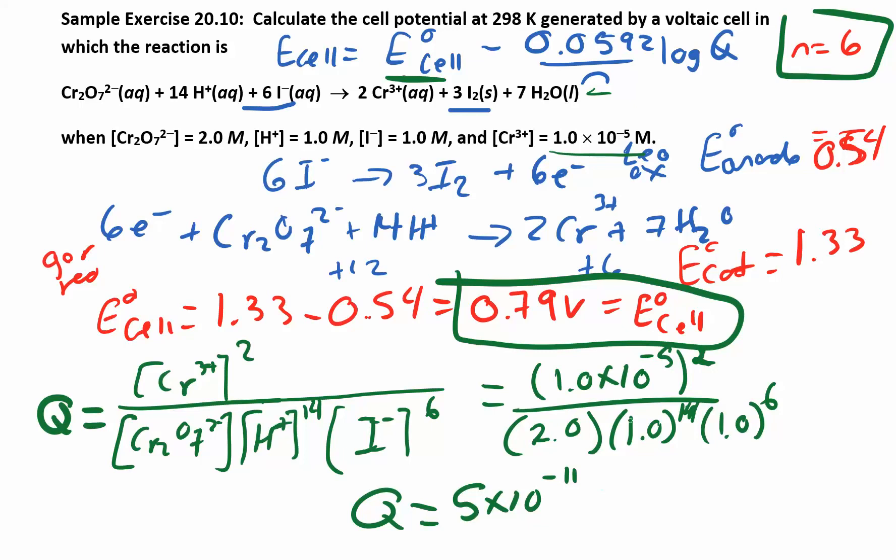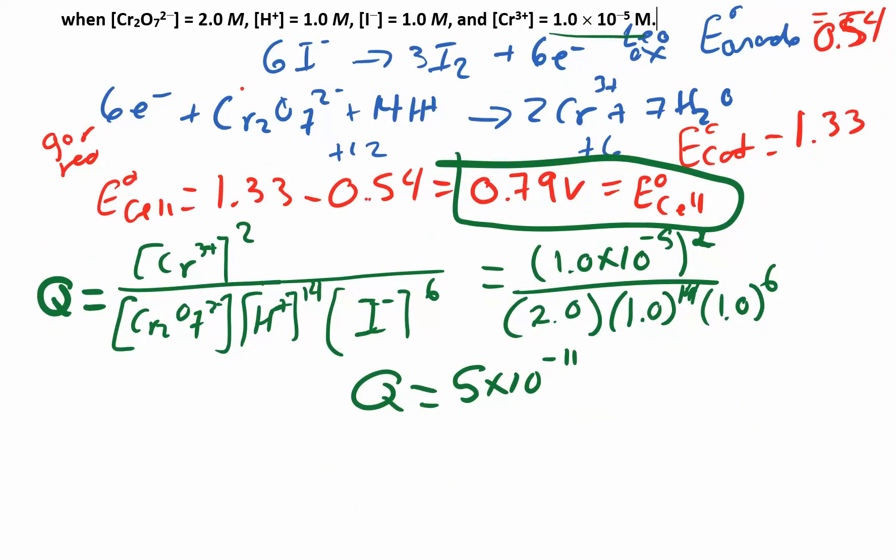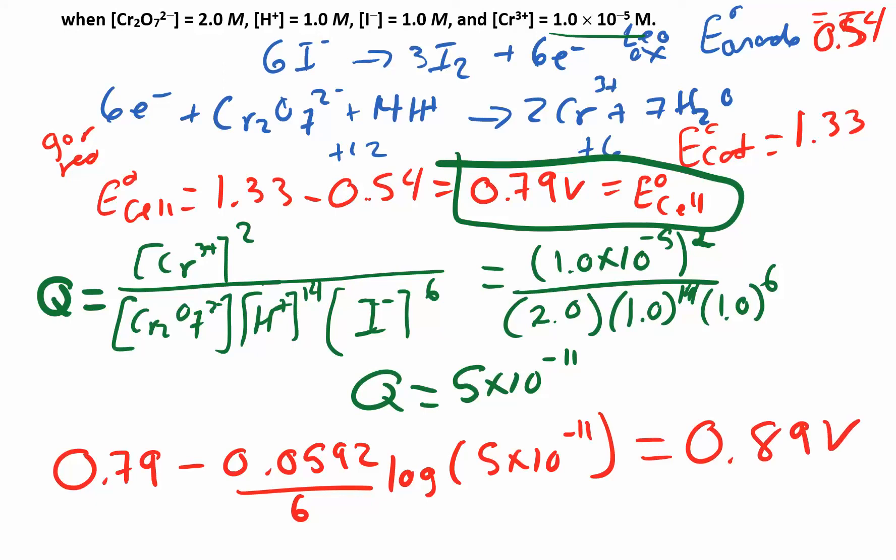And now I can plug all of that into this equation. So now I have Q. I have 1 over n which is 6 times the log of Q, 5 × 10⁻¹¹. And so when you work all that out, that's your E_cell. That becomes 0.89 volts. We end up with 0.89 volts.